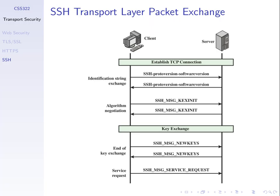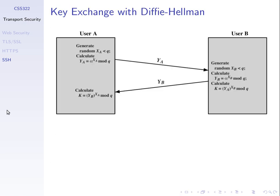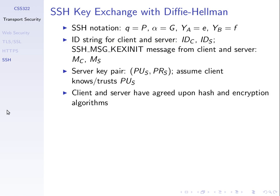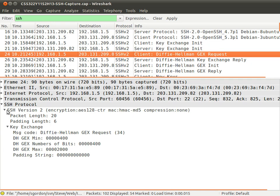In terms of how SSH names the Diffie-Hellman parameters: in our lectures we called them Q, alpha, YA, and YB. SSH calls them P, G, E, and F. The first message is sent by the client to the server saying we want to start a Diffie-Hellman key exchange, indicating the minimum and maximum value of G. Then in the next message the server responds by choosing P and G.